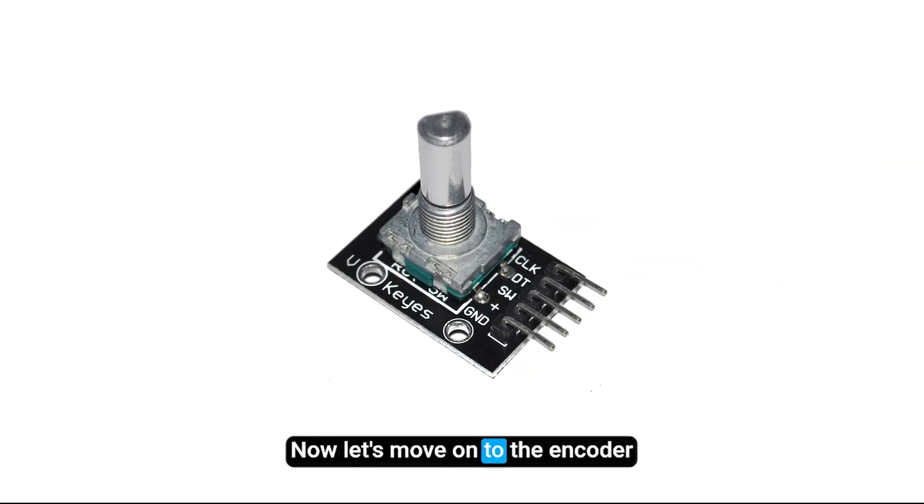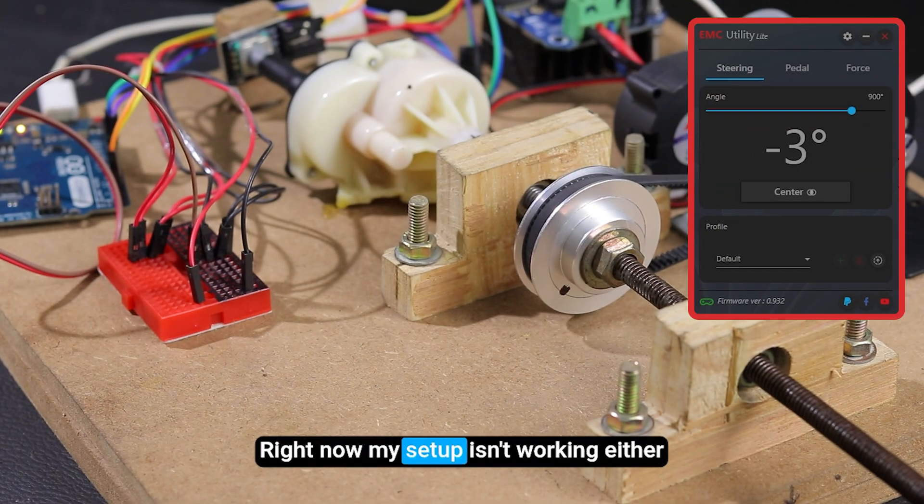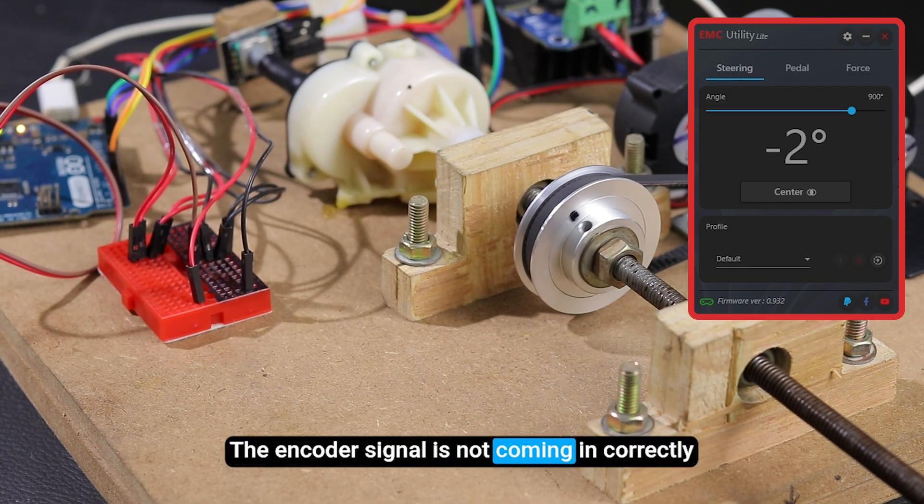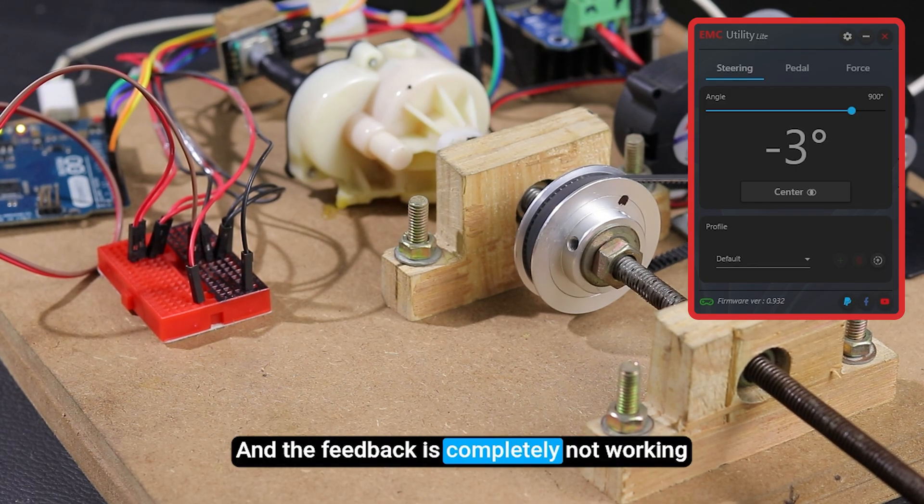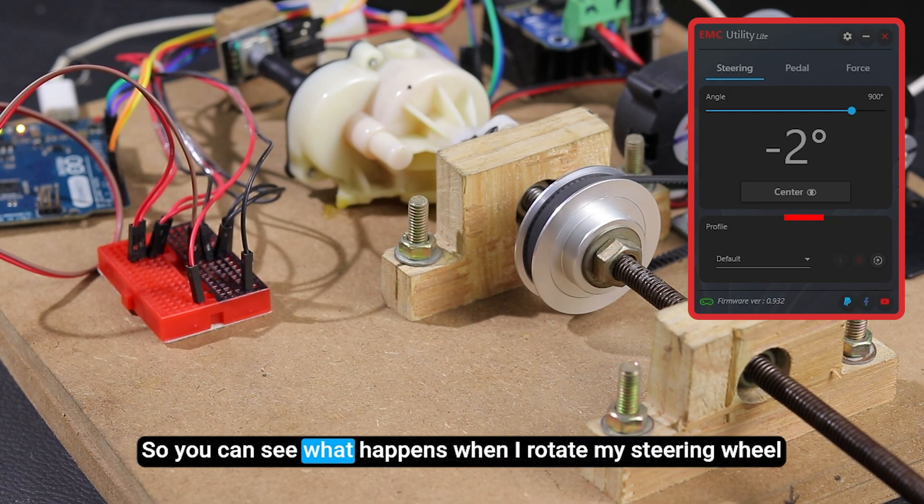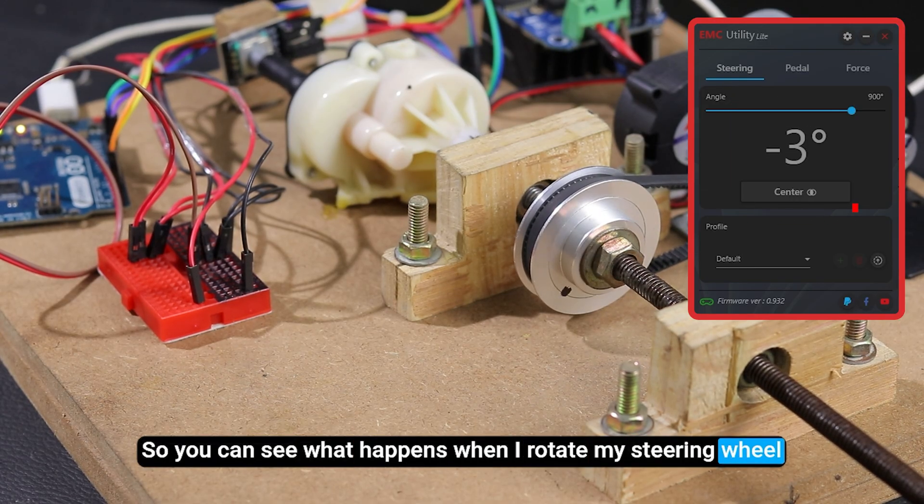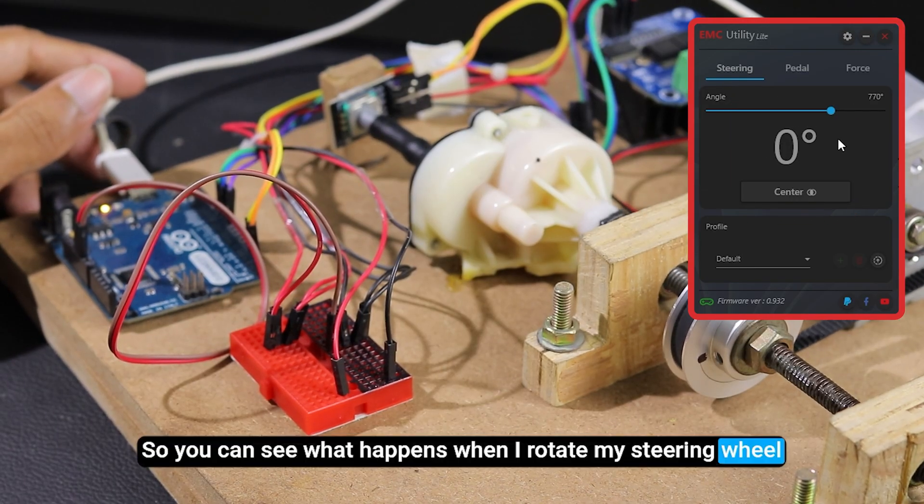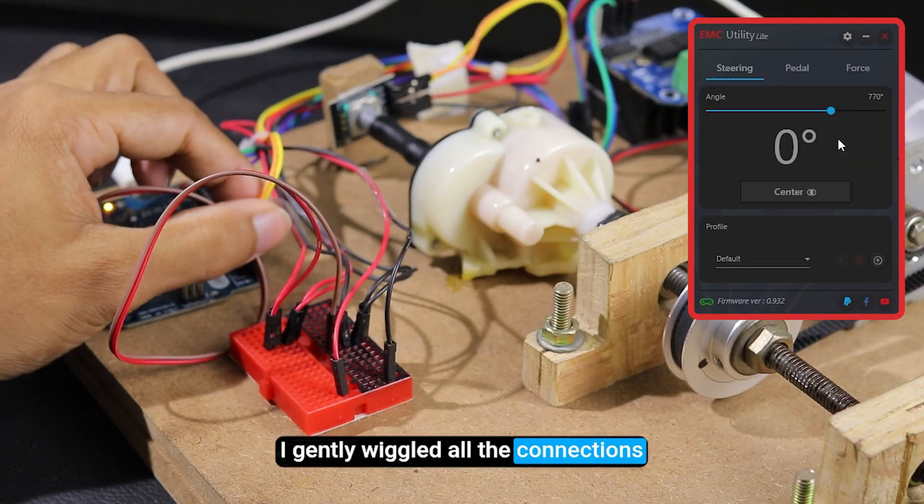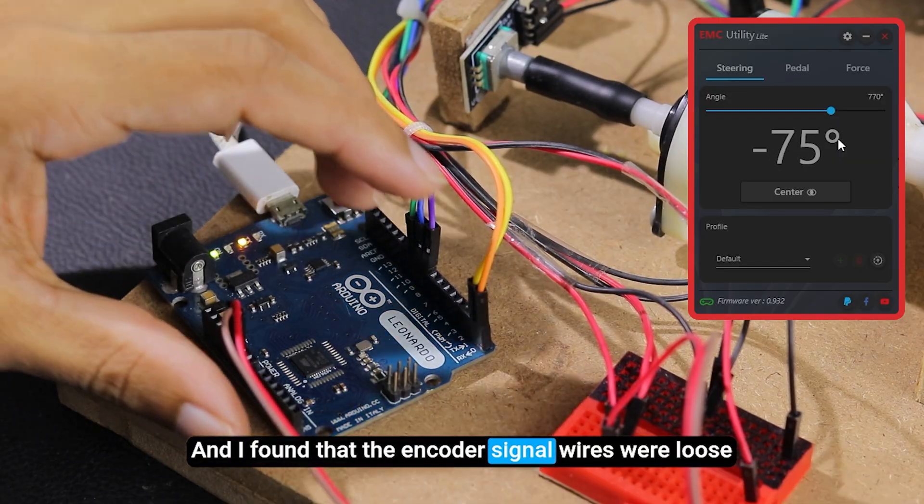Now let's move on to the encoder. Right now my setup isn't working either. The encoder signal is not coming in correctly and the feedback is completely not working. So you can see what happens when I rotate my steering wheel. I gently wiggled all the connections and I found that the encoder signal wires were loose.